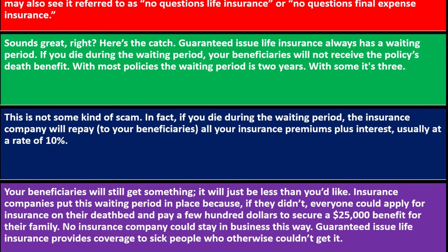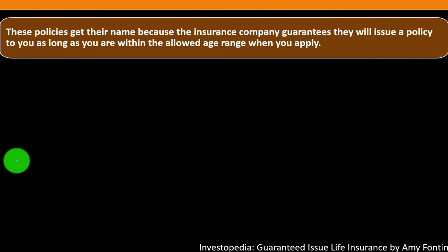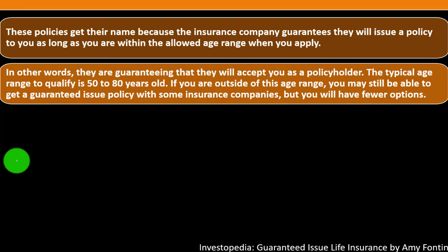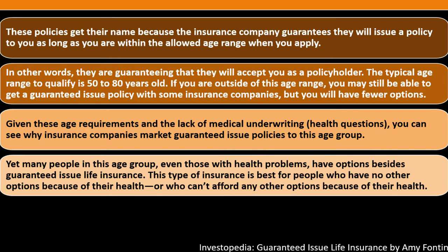These policies get their name because the insurance company guarantees they will issue a policy to you as long as you are within the allowed age range when you apply — they are guaranteeing that they will accept you as a policyholder. The typical age range to qualify is 50 to 80 years old. If you are outside this age range, you may still be able to get a guaranteed issue policy with some companies, but you will have fewer options. This type of insurance is best for people who have no other options because of their health, or who can't afford any other options.